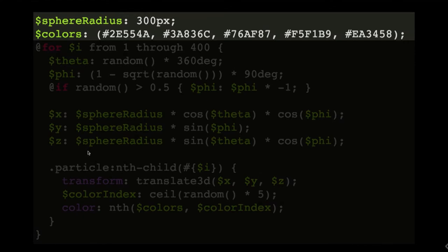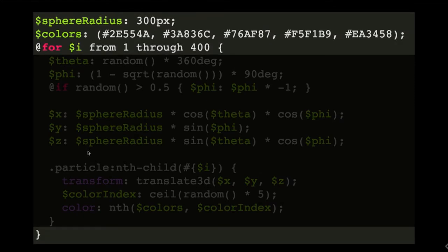So let's get back to our CSS. Because the radius is the same for all the particles, we can store it into a CSS variable. We are also saving the colors needed for the demo into a CSS list. Then we start a loop from 1 through the amount of particles we have.